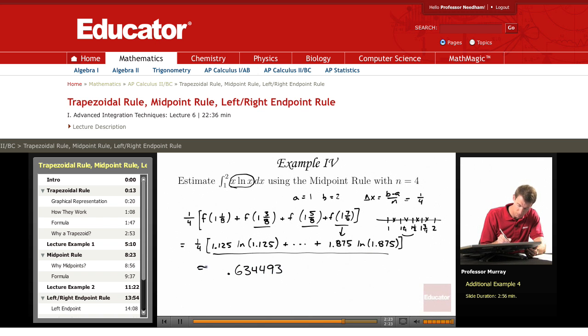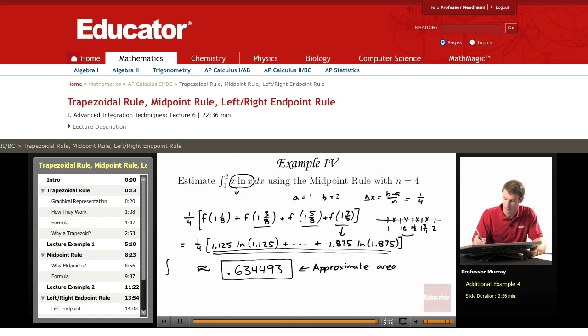And so that tells us that our integral is approximately equal to 0.634493. Notice there that we never actually solved the integral as we would have using some of our earlier techniques in Calculus 2. We just picked different points and plugged them into the function and got an approximation of the area.